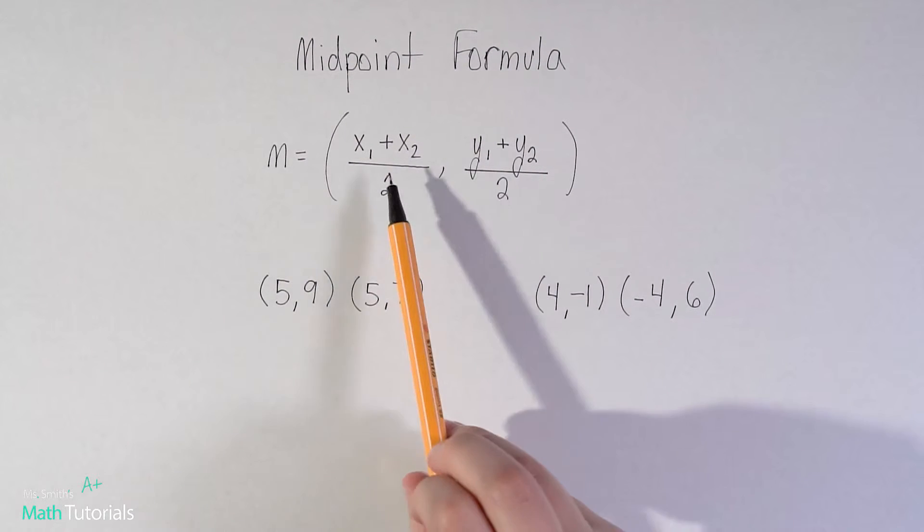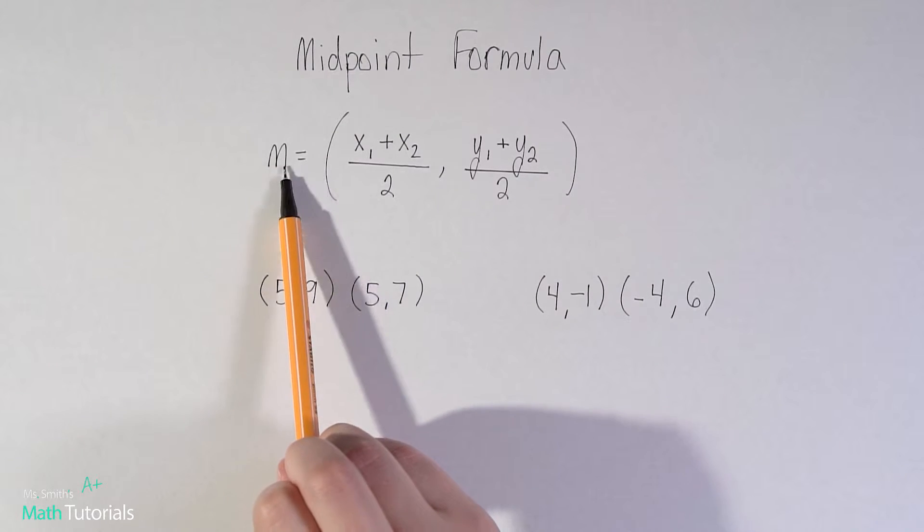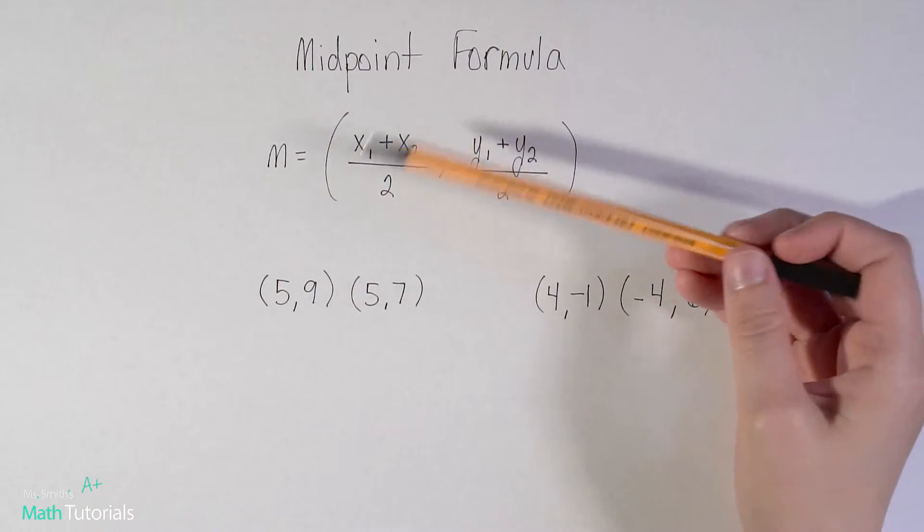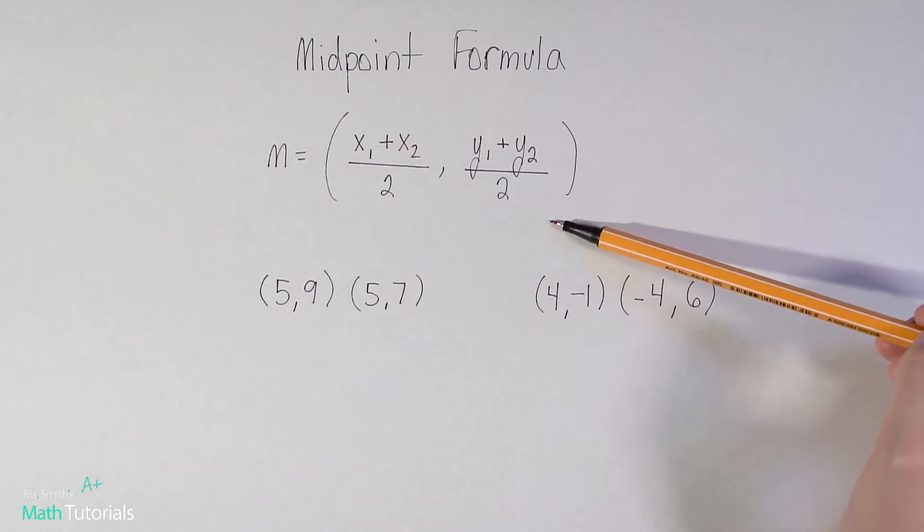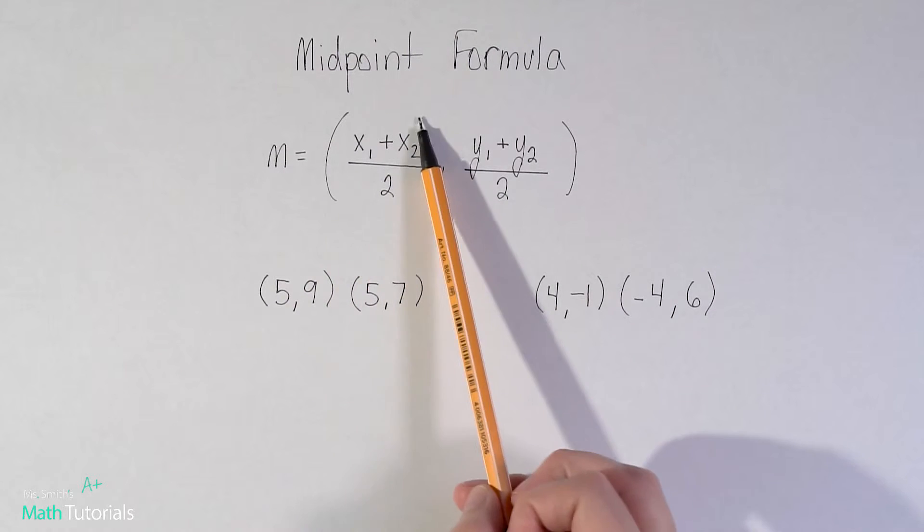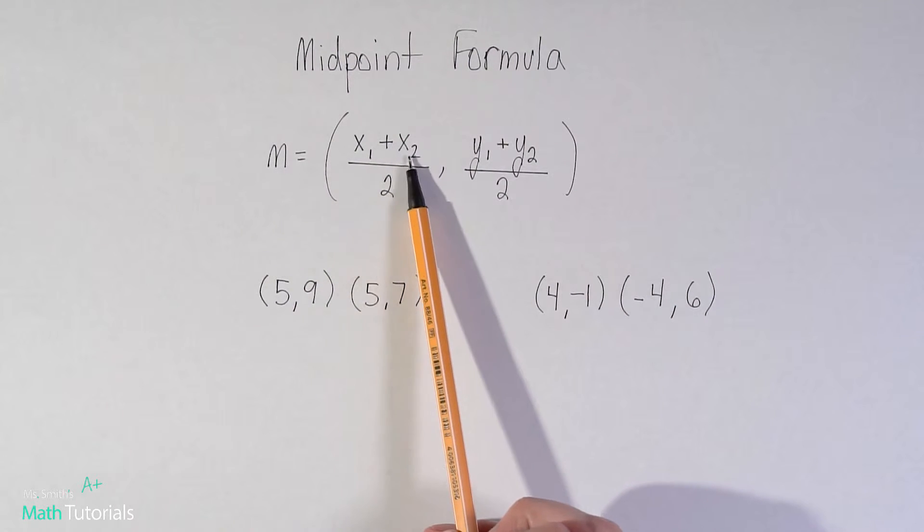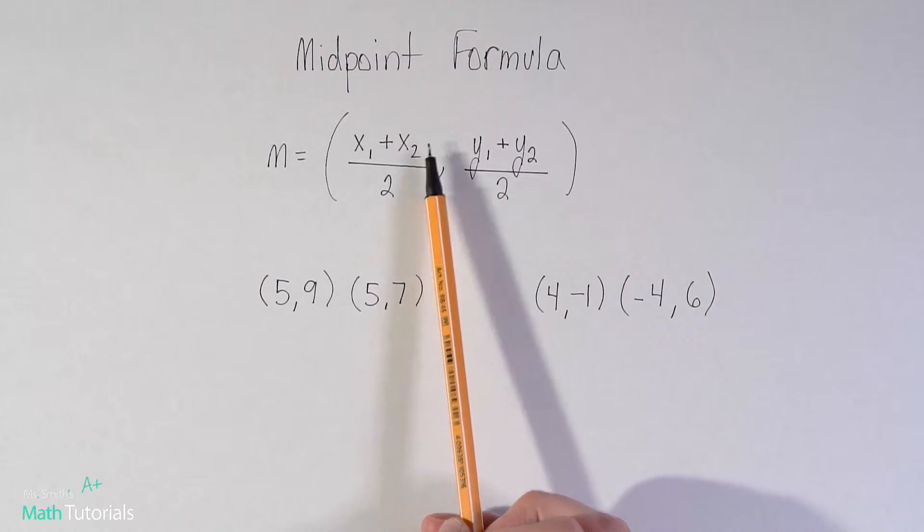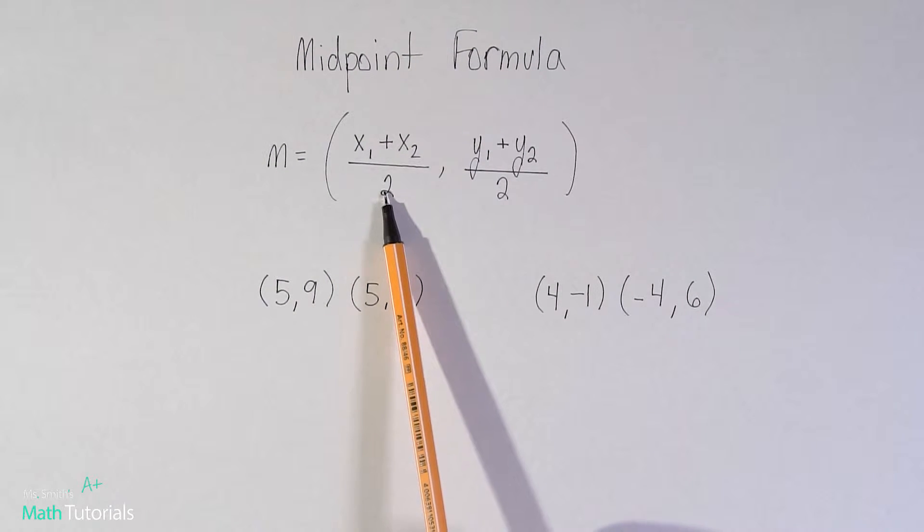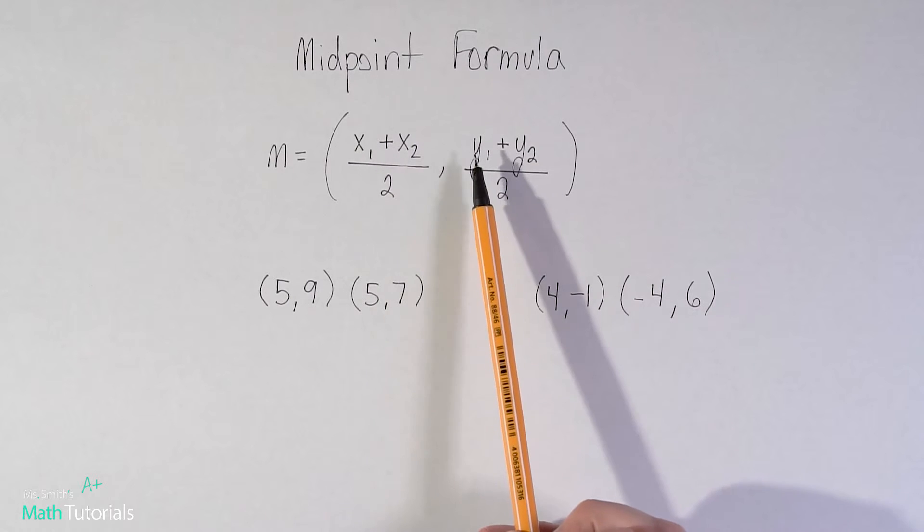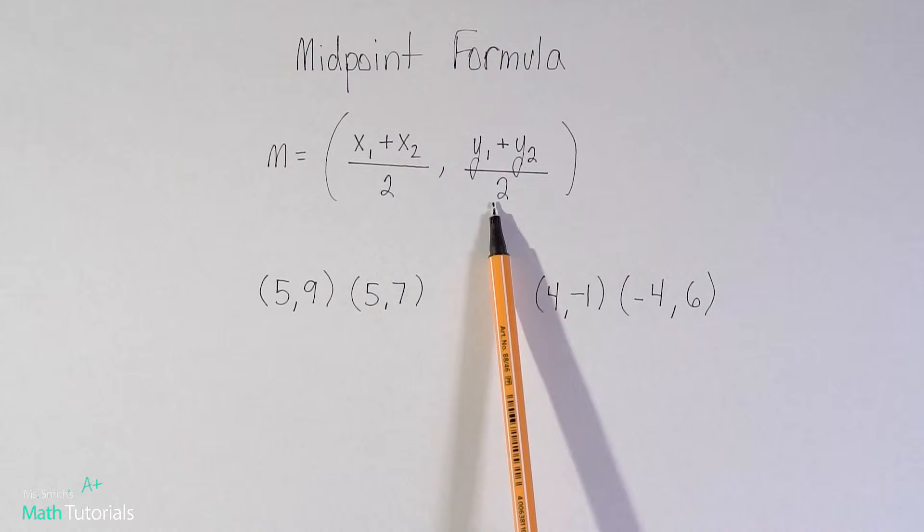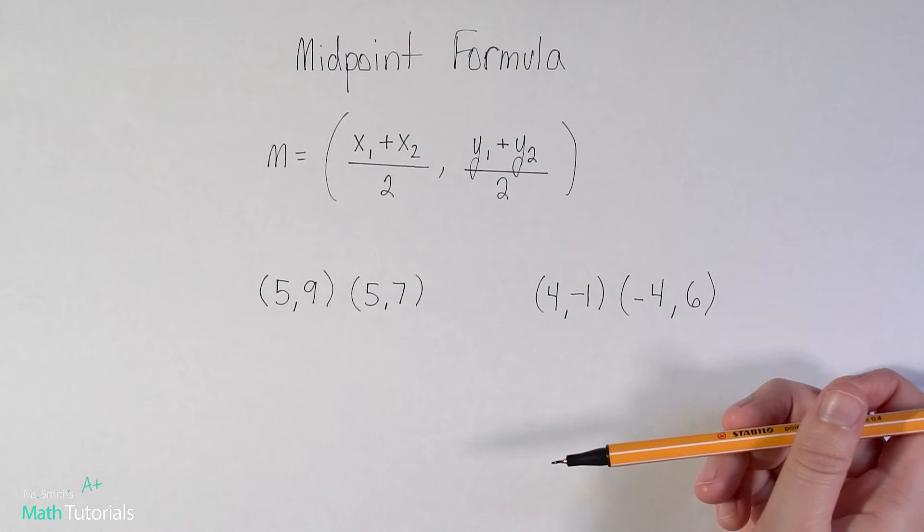It's very simple to use. Midpoint equals - you've got your parenthesis and what this shows is that our answer is going to be a point, an x-y point. To find our x, it would be x1 plus x2. We would simplify this top and then divide by two. It's very simple once you have it memorized.